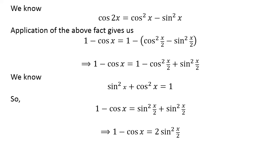Adding like terms gives us 1 minus cosine of x is equal to 2 times square of sine of half of x. Thus, we verified the identity.